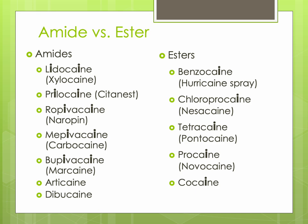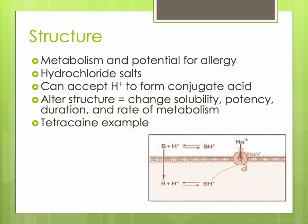The important difference between ester and amide local anesthetics relates to the site of metabolism and the potential to produce allergic reactions. Clinically, drug solutions are formulated as hydrochloride salts to maintain solubility and stability. By altering the chemical structure, you change lipid solubility, potency, rate of metabolism, and duration. For example, substituting a butyl group for the amine group on procaine gives you tetracaine — which is more lipid soluble, 10 times more potent, has a 4–5 times decreased rate of metabolism, and a much longer duration of action.